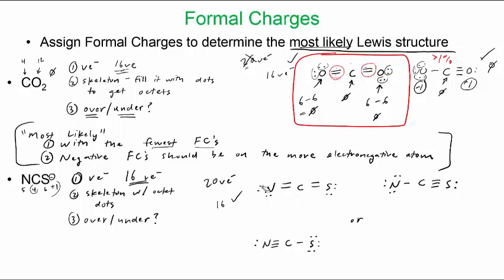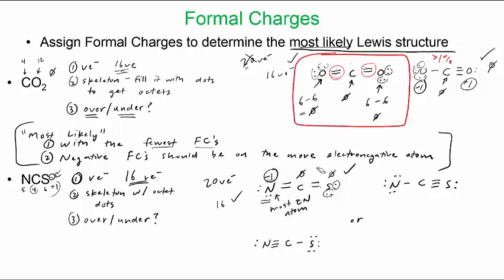For the double-bond structure: nitrogen is five minus two lone pair electrons minus four bonding electrons equals minus one — it's not following the octet rule since it doesn't have three dashes. Sulfur is six minus two minus four equals zero. Carbon is zero. The net charge is minus one, which is correct, and the minus one is on nitrogen, the most electronegative atom — this is probably the winner.